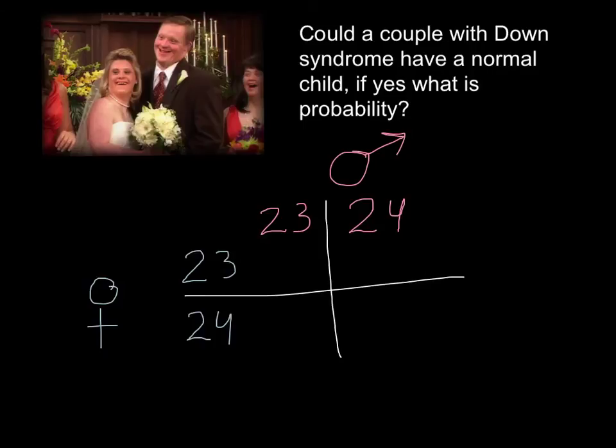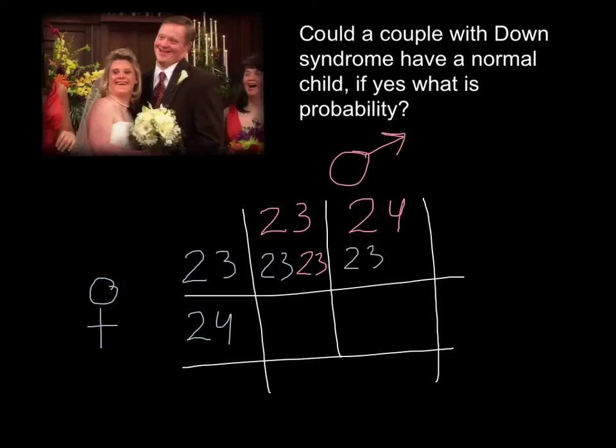We just have to fill this square. Here we have 23 from the mother side and 23 from the father side, so normal number 46. Here we have 23 from the mother side and 24 from the father side - Down syndrome. Here we have 24 from the mother side and 23 from the father side - that is also Down syndrome, 47 chromosomes. And here we have 24 from the mother side and 24 from the father side.